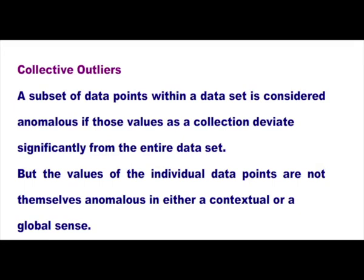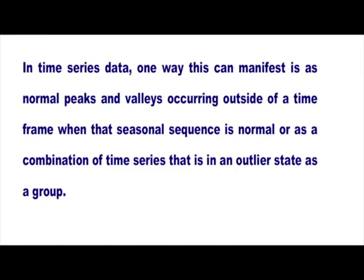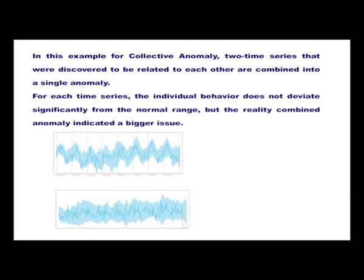Next is collective outliers. A subset of data points within a data set is considered anomalous if those values as a collection deviate significantly from the entire data set, but the individual data point values are not themselves anomalous in either a contextual or a global sense. In time series data, this can manifest as normal peaks and valleys occurring outside a time frame when that seasonal sequence is normal, or as a combination of time series that is in an outlier state as a group. In this example, two time series discovered to be related are combined into a single anomaly; the individual behavior does not deviate significantly from the normal range, but the combined anomaly indicated a bigger issue.